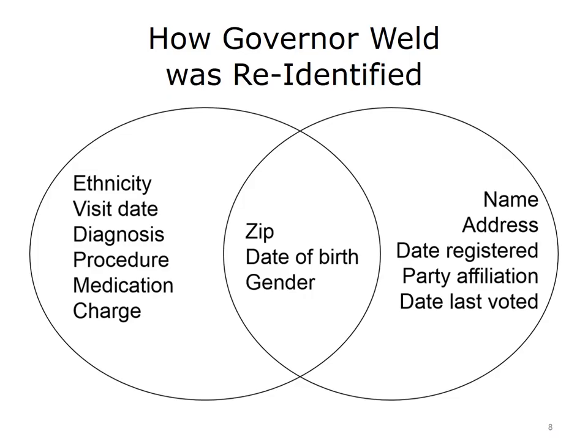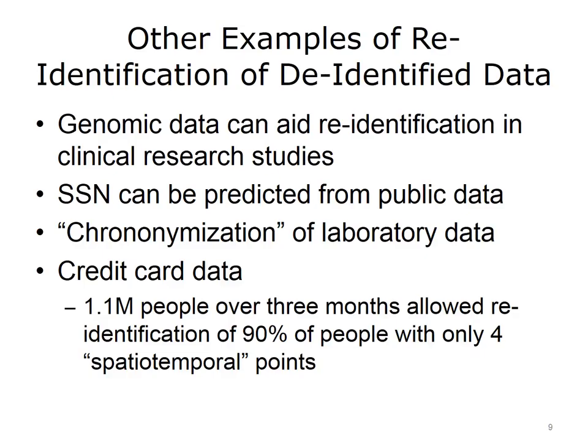This demonstrates how the governor's medical data was discovered. There are other examples of re-identification from de-identified data. A couple analyses have found that genomic data can help re-identify patients in databases of clinical research studies. Equisti found that Social Security numbers can sometimes be predicted from public data sets. Simeno and colleagues looked at chromatization of laboratory data — taking panels of test results where combinations of values are likely unique to re-identify patients. Credit card data also turns out to be a source of re-identification, with one analysis of 1.1 million people over three months finding that 90% could be re-identified with only four spatiotemporal points — knowing where and when the credit card was used.